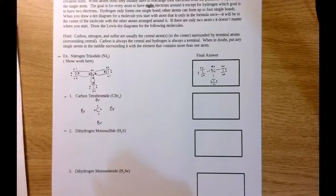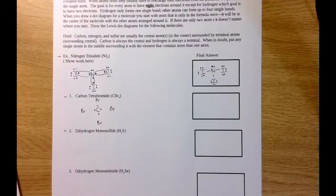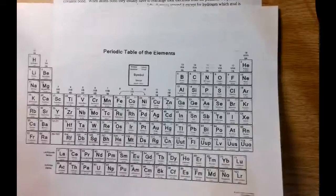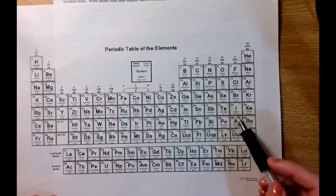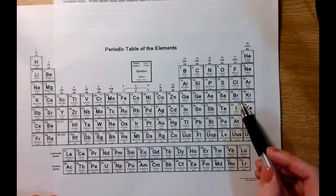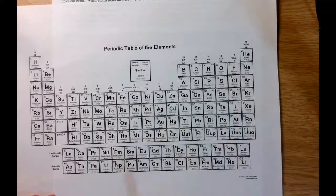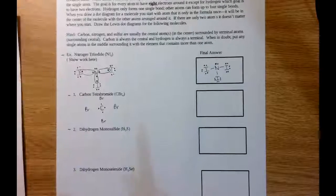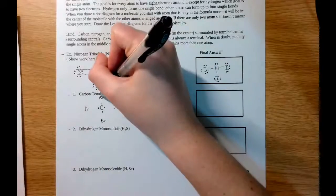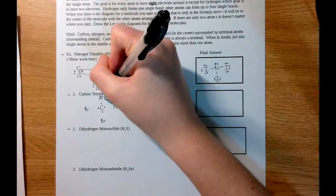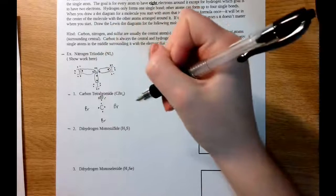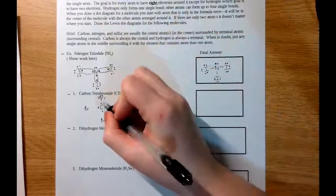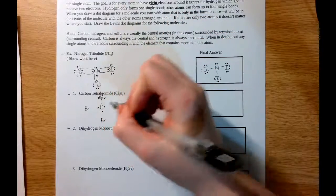Now we need to know how many valence electrons are in a bromine atom. We look at our periodic table — bromine is a halogen in group 7A, so it has seven valence electrons. For each bromine, we fill in seven valence electrons, and we leave the one unpaired valence electron on the inside so it can bond with carbon.